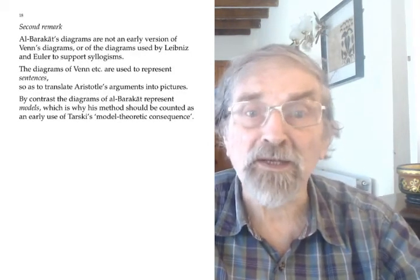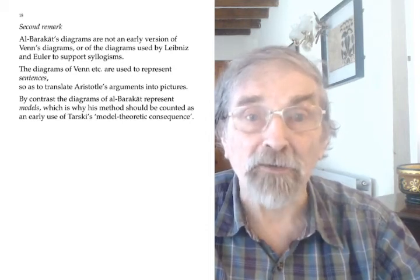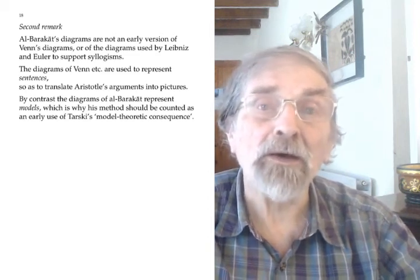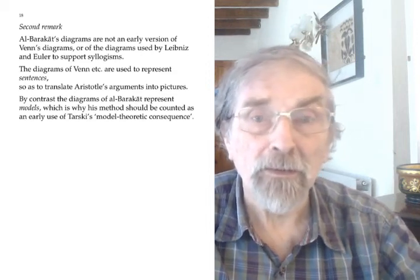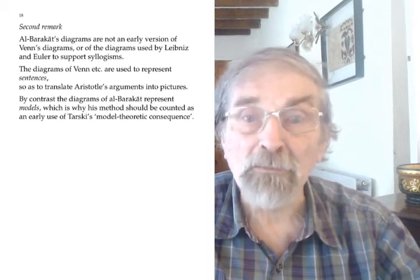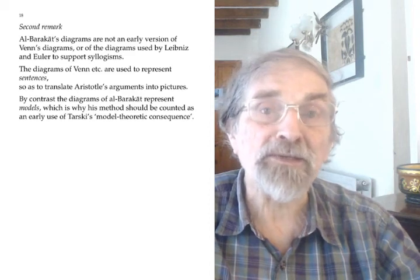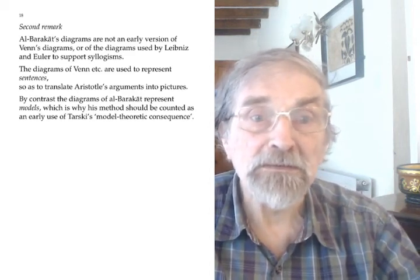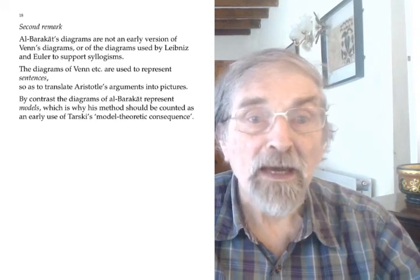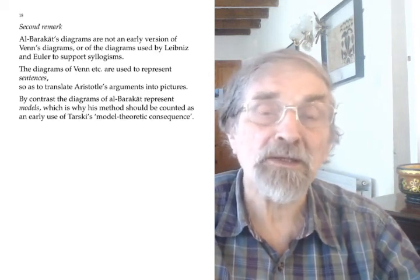The second remark goes back to what I said at the beginning — that a better-known way of using diagrams for Aristotle's logic is Venn diagrams. You might think that al-Barakat's diagrams are an early form of Venn diagrams, but this is not correct — they're based on a completely different idea. As Venn himself made clear, his diagrams were intended to put Aristotle's arguments into a pictorial form, so his diagrams represented sentences, not models. With al-Barakat it's the other way around: his diagrams represent models, not sentences. And we've seen many times in this talk that there is not a one-to-one correspondence between sentences and models.